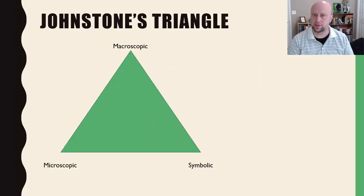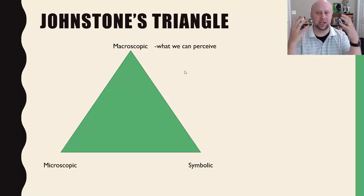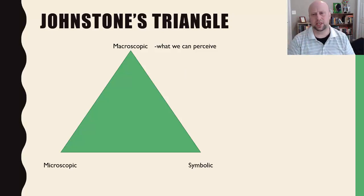And so let's jump into it. A lot of the ideas that we're going to talk about here come from an idea called Johnstone's triangle in chemistry, and here's what that means. We can look at things in a macroscopic way. Macroscopic is what we can see and perceive with our senses. And I'm going to go into some examples of this momentarily, but essentially that's what we can perceive without really some instrumentation.